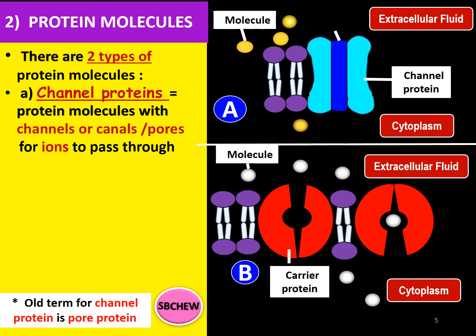Channel proteins are protein molecules with channels, canals, or pores in them for ions to pass through into the cytoplasm. Referring to picture A, this pore forms a straight long tunnel into the cell from the outside. When you are asked to identify channel proteins, look for this long straight tunnel. The shape of the protein may vary, but the pore should always be there — that is the key feature of channel proteins.